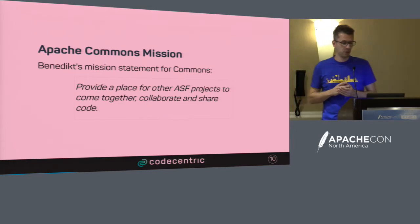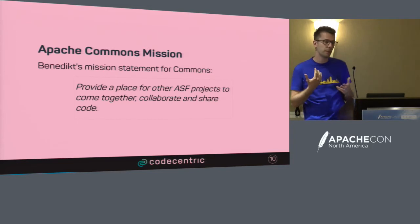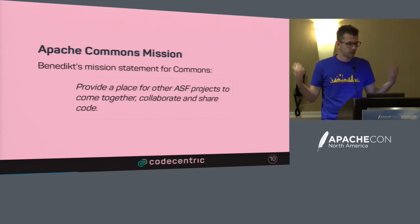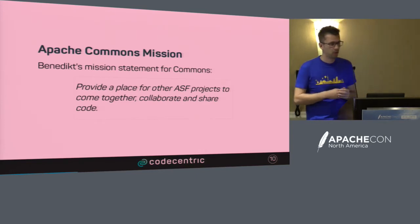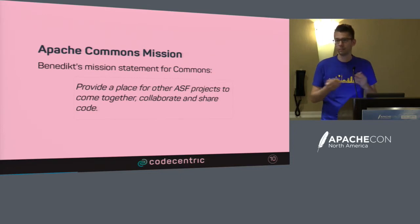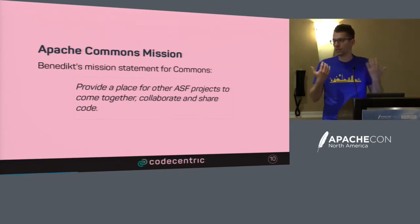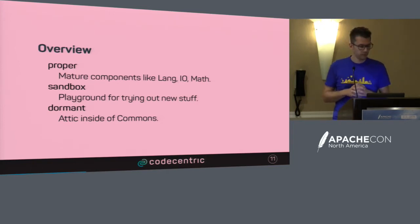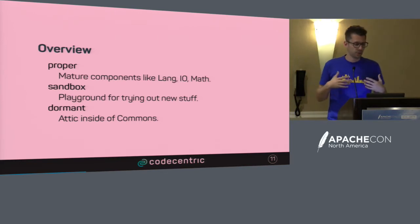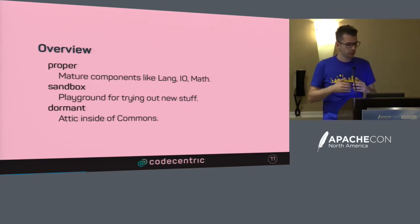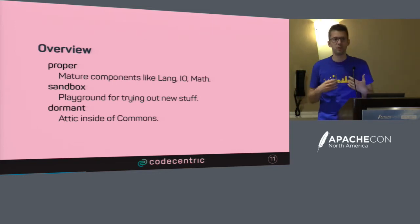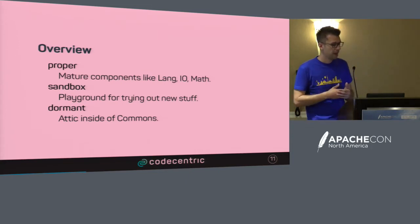What is Apache Commons' mission? My view is that we should provide a place for ASF projects to come together, collaborate, and share common code. If you're a committer with useful code that could benefit other ASF projects, come to our mailing list and we'll see if it fits. Commons has an area called 'proper' - these are the mature components like Lang, IO, Math, Net, and Codec that are battle-tested and reliable.